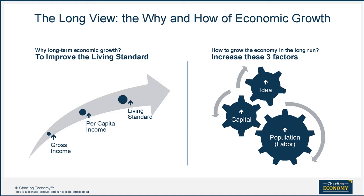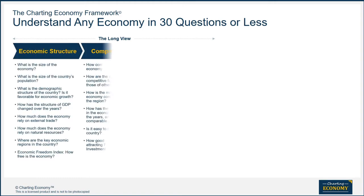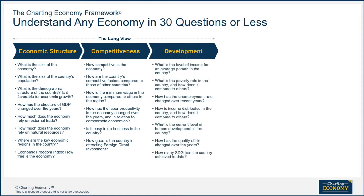That's the job of policy makers. What about spectators like us? We can ask questions that give us clues to assess those three factors and the results on people's well-being. In the long view, our framework divides the questions into three groups: economic structure, competitiveness, and development. Development is the eventual result of long-term growth, which is in turn driven by economic structure and competitiveness.